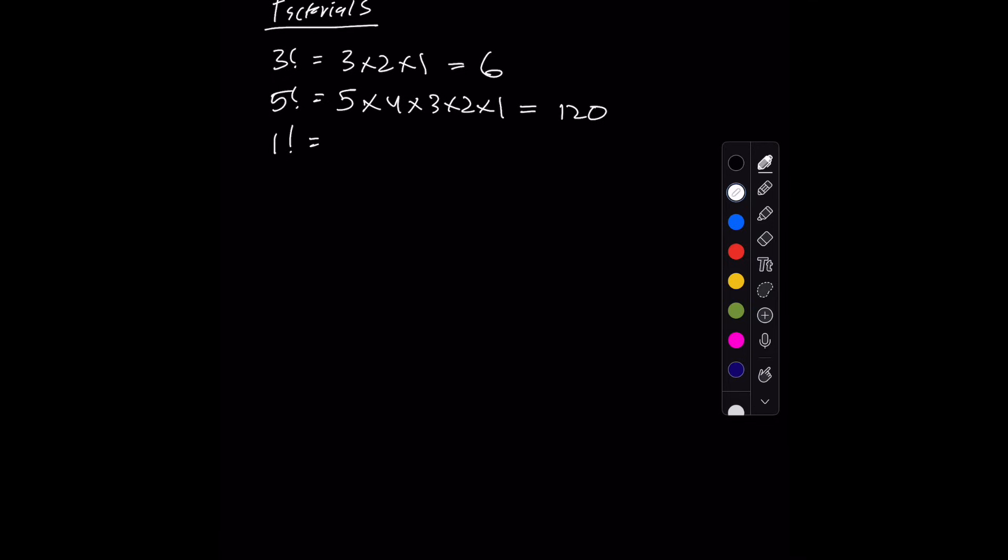And we know 1 factorial is just 1. But 0 factorial is also 1. Why? Well, factorials follow a general formula like this: n factorial is equal to n times n minus 1 factorial.